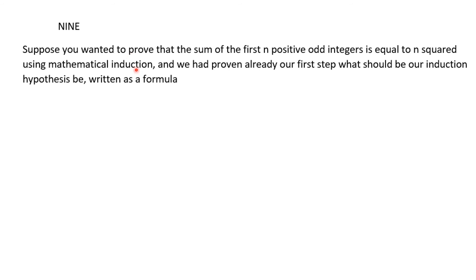Number nine, suppose you wanted to prove this is the same thing, that the sum of the first n positive odd integers is equal to n squared using mathematical induction, and we have already proven our first step. So we're taking what we did before as a given. What should our induction hypothesis be? And you're to write this as a formula.